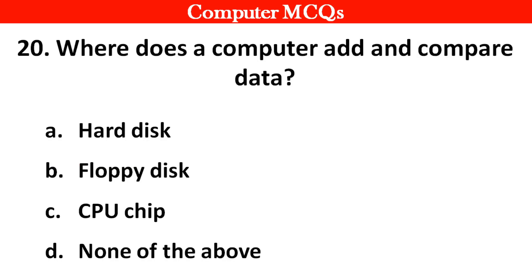Where does a computer add and compare data? Option A hard disk, B floppy disk, C CPU chip, D none of the above. Right answer is option C, CPU chip.